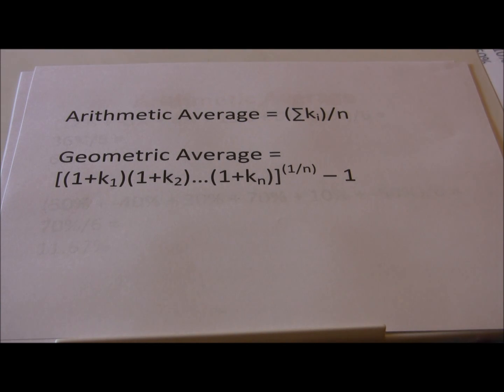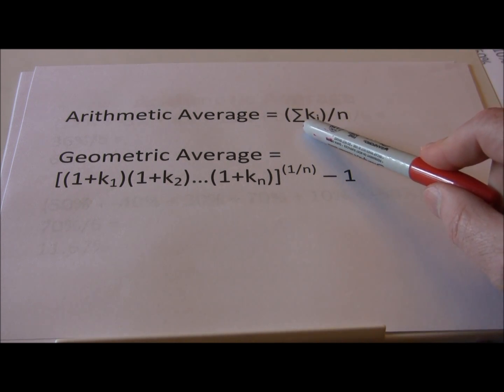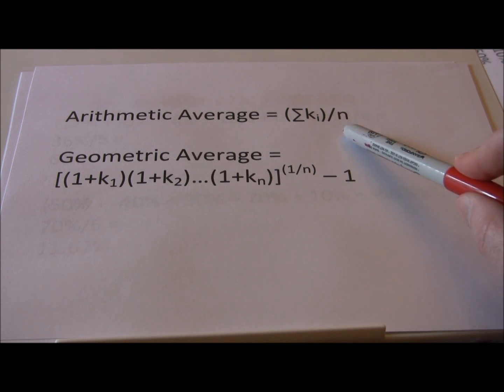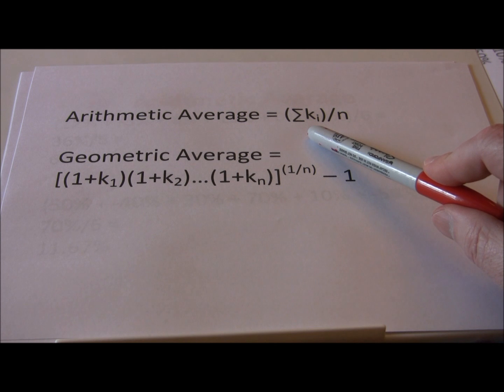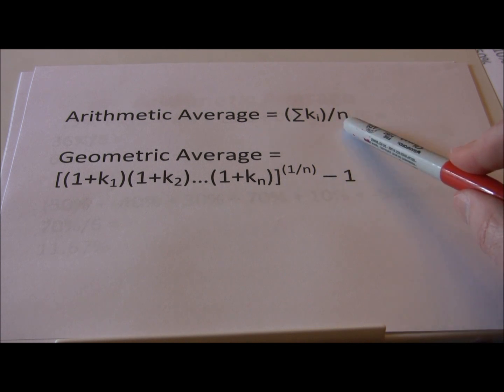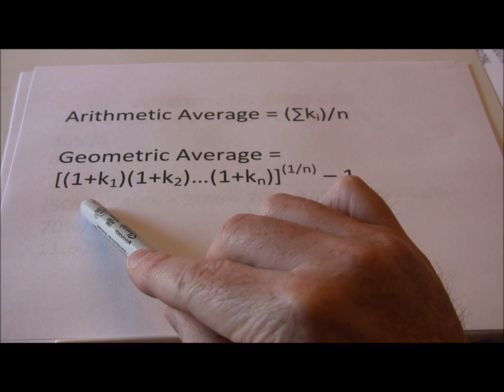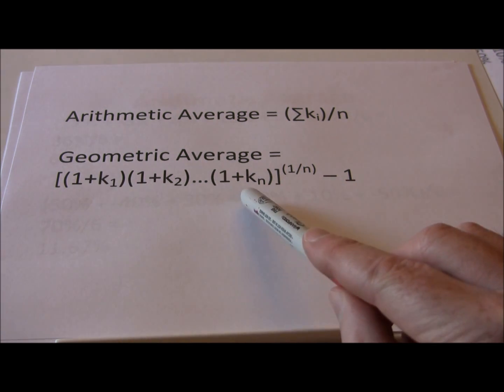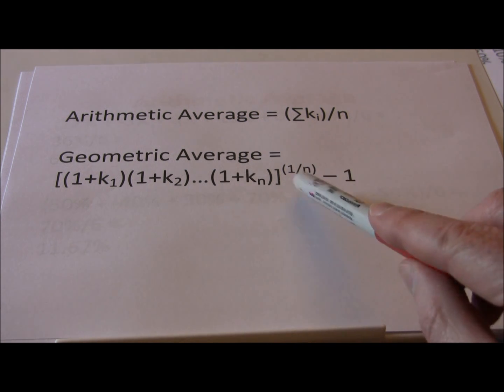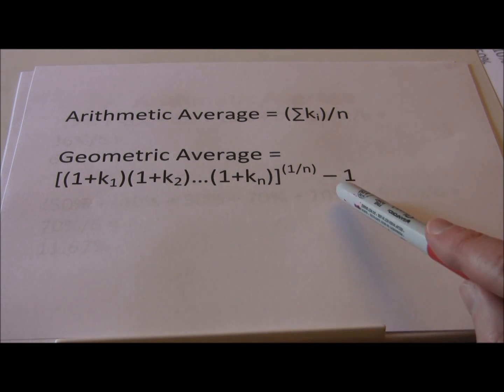When we look at arithmetic averages versus geometric average returns we can think of a formula. Arithmetic average just sums up the individual returns and divides by the number of periods. So we just add up all six years worth of returns, divide by six. The formula for geometric average is a little more complicated. We have to take for each year one plus the return, multiply those together for all the years, then take the nth root. In this case there are six years, so we take the sixth root, n would be equal to six, and subtract off one.